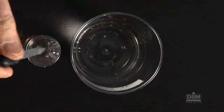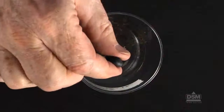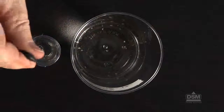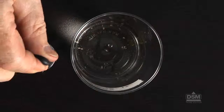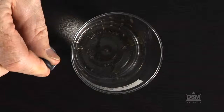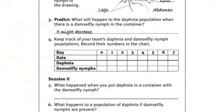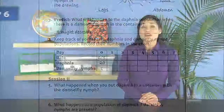Next, have each team add more daphnia to their container until there are 20 daphnia together with the damselfly nymph. Then tell them to write the observation day number, today's date, and the population numbers in the chart on their activity sheets. Finally, place the containers with the damselfly nymphs and daphnia in an area of the classroom away from direct sunlight and heat sources.